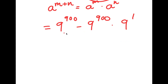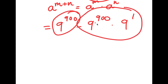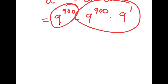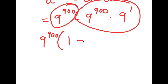From here, notice we have two terms: our first term is 9 to the power of 900, and our second term is 9 to the power of 900 times 9 to the power of 1. Because both terms have 9 to the power of 900 in them, we can factor that out. Factoring gives 9 to the power of 900 times, in parentheses, 1 minus 9 to the power of 1.